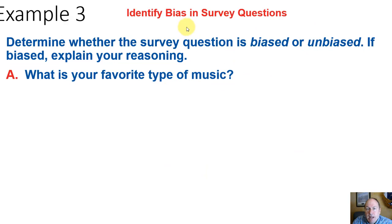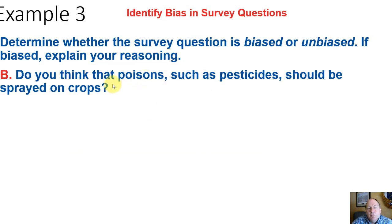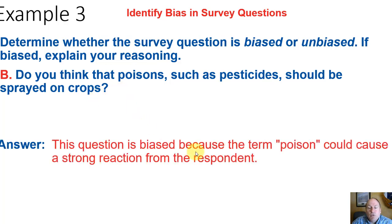Now let's look at the very important concept of bias — whether there is bias in a particular survey question. When designing a survey, you want to try to minimize or eliminate bias. 'What is your favorite type of music?' is unbiased because it's clearly stated and doesn't encourage a certain type of response. But 'Do you think that poison, such as pesticides, should be sprayed on crops?' is a biased question because the term 'poison' could cause a very strong reaction and change your response.